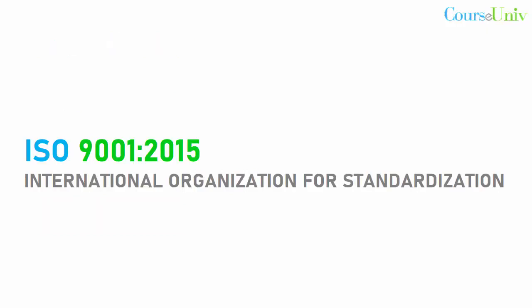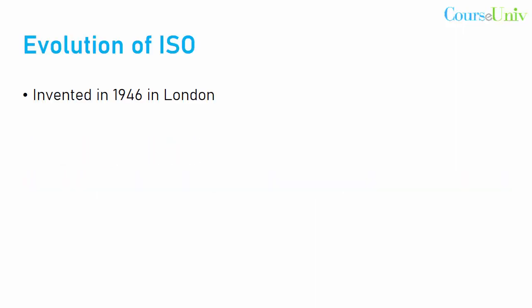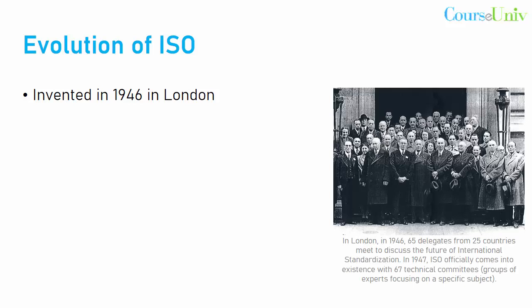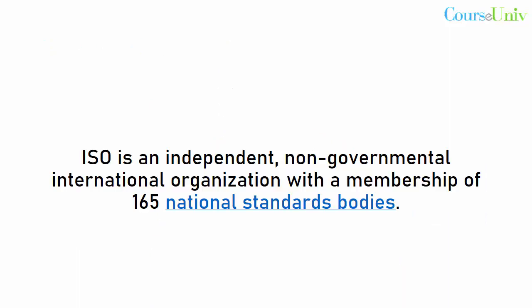The ISO International Organization for Standardization is a voluntary organization which took birth in 1946, with a group of engineers meeting in London to help industries and products and services achieve standardization. It all started this journey and now the International Organization for Standardization has 165 member countries.